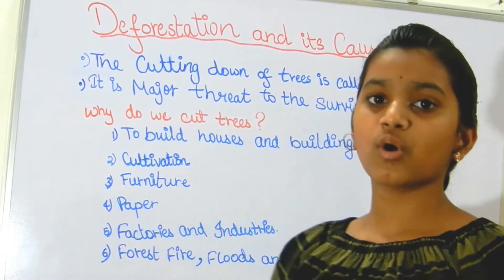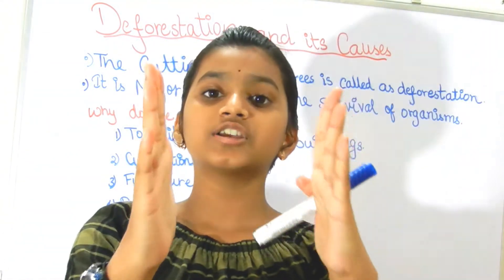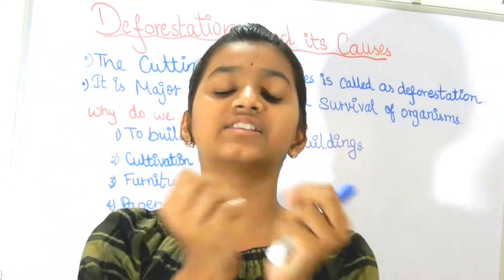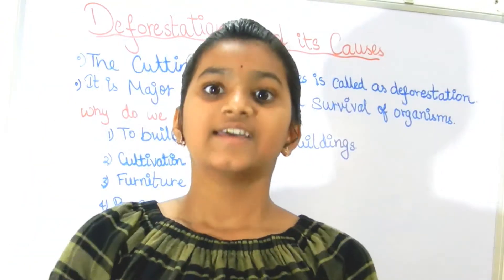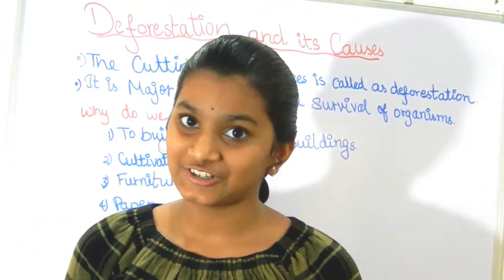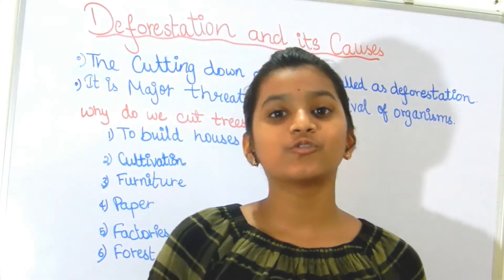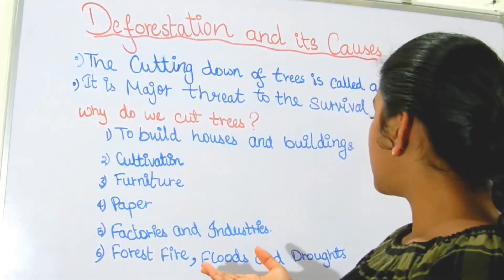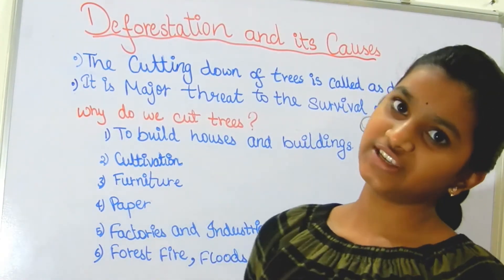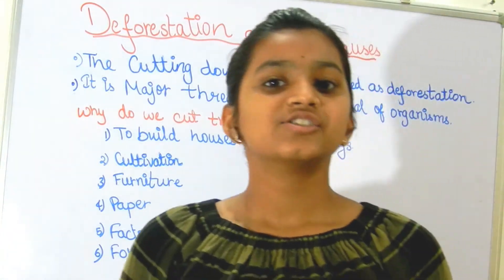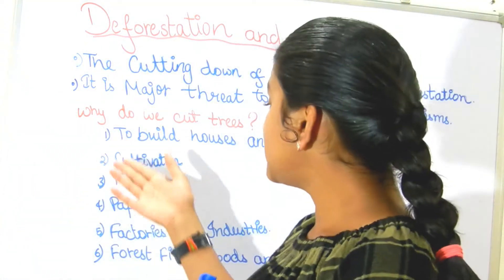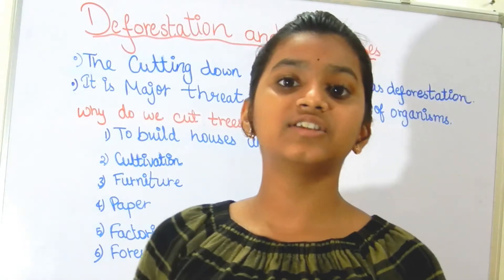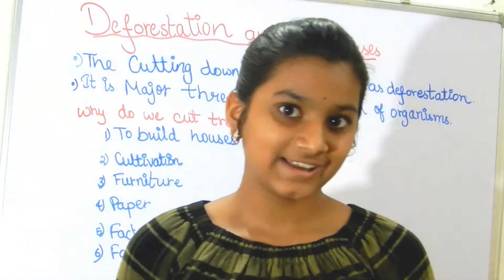There is also a natural phenomenon: forest fire. In the forest, when two trees rub against each other due to wind, it creates fire — that is actually how fire was invented. Due to forest fire, trees get destroyed. Natural phenomena like floods and droughts also cause trees to be lost. These are the human needs and natural phenomena that are reasons why trees get cut.